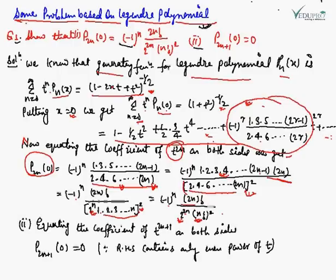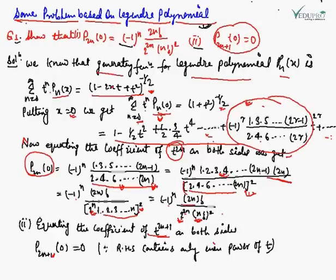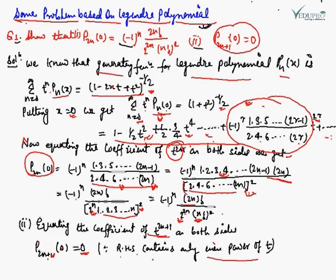For the second part, we have to prove P₂ₙ₊₁(0) = 0. Equating the coefficient of t^(2n+1) on both sides: on the left side we get P₂ₙ₊₁(0), but on the right side we can see that the expansion contains only even powers of t — t², t⁴, ..., t^(2r) — so there is no odd power of t. Therefore P₂ₙ₊₁(0) = 0.